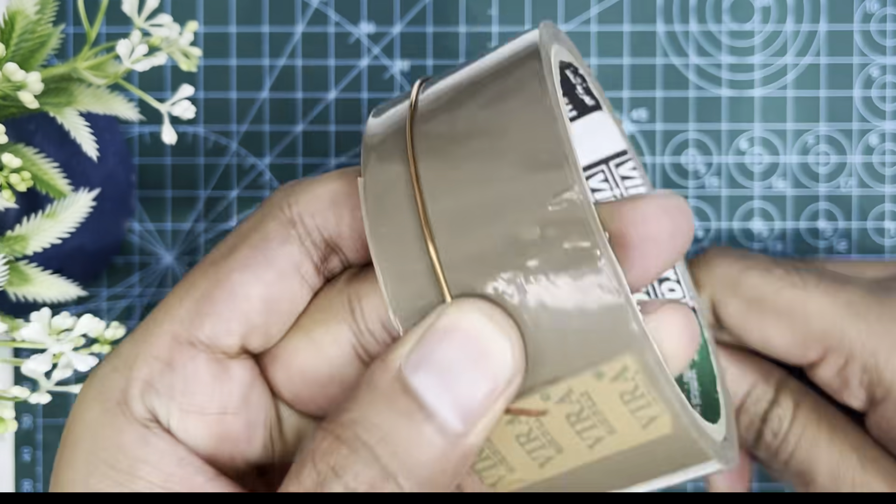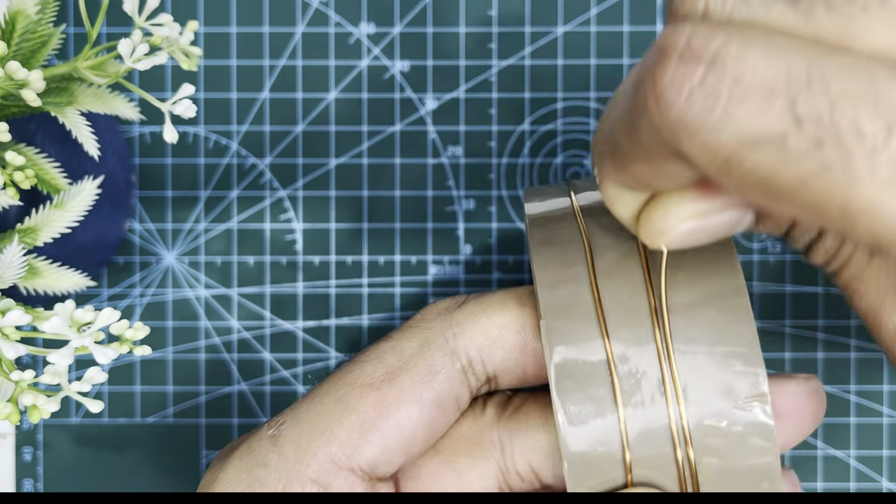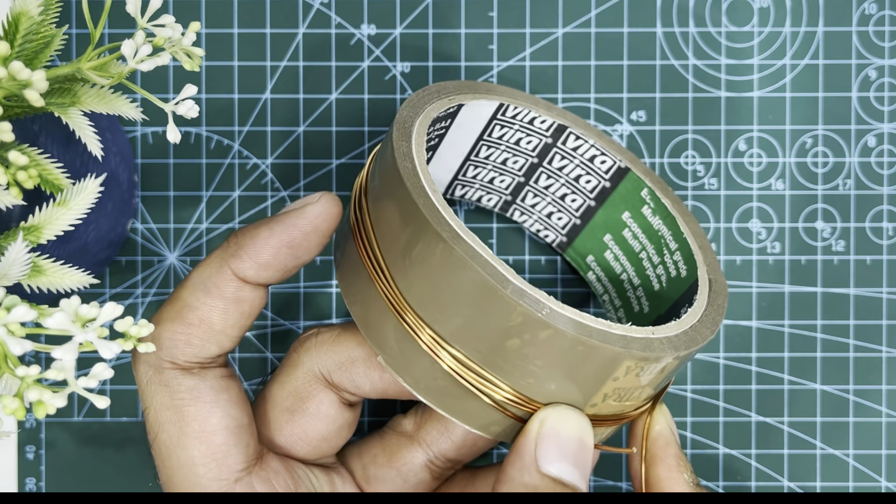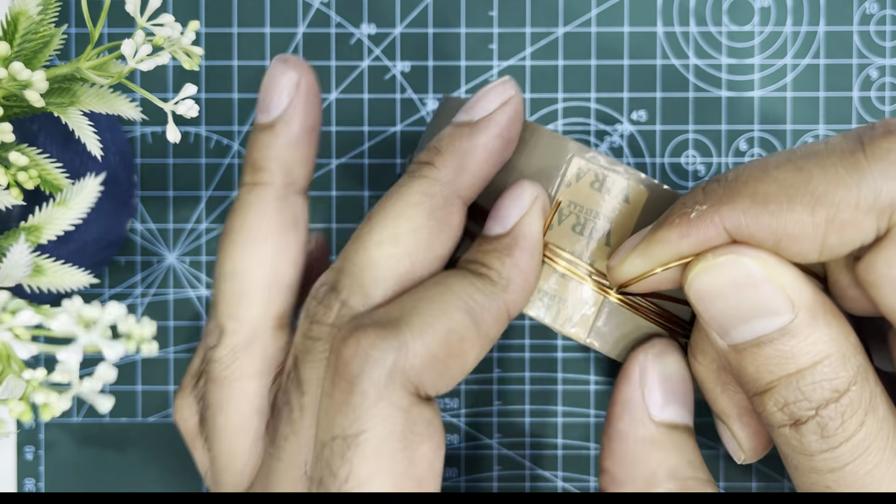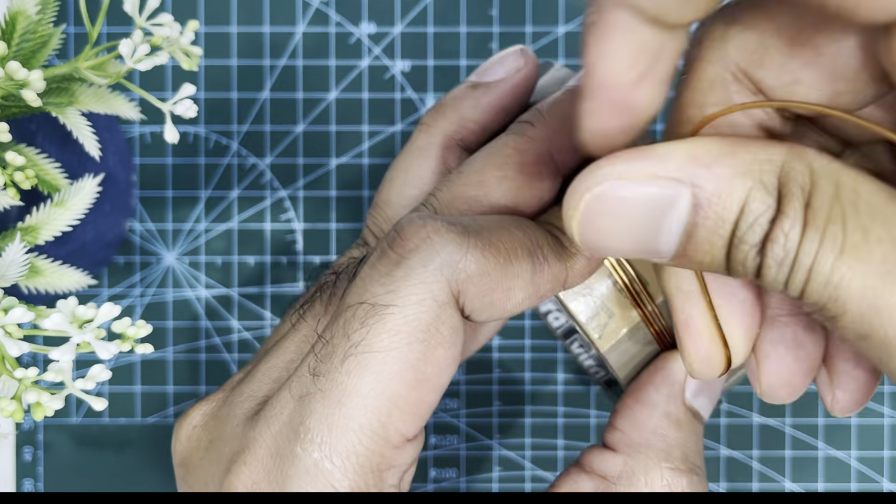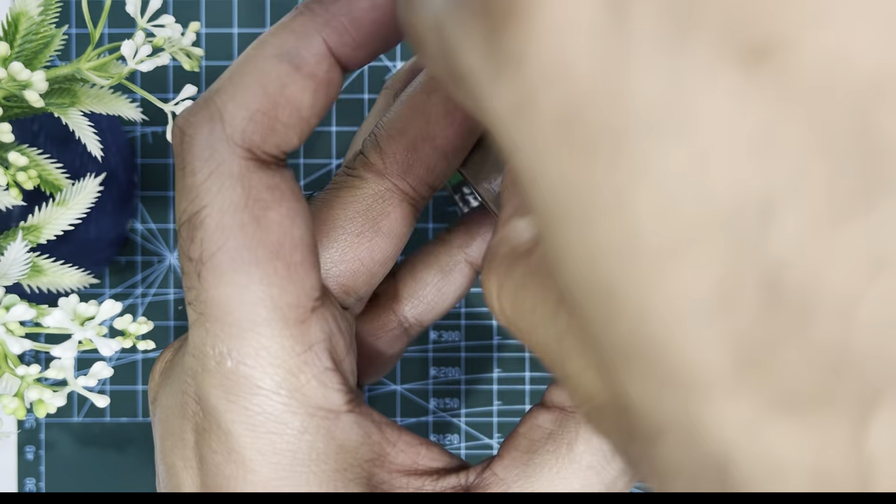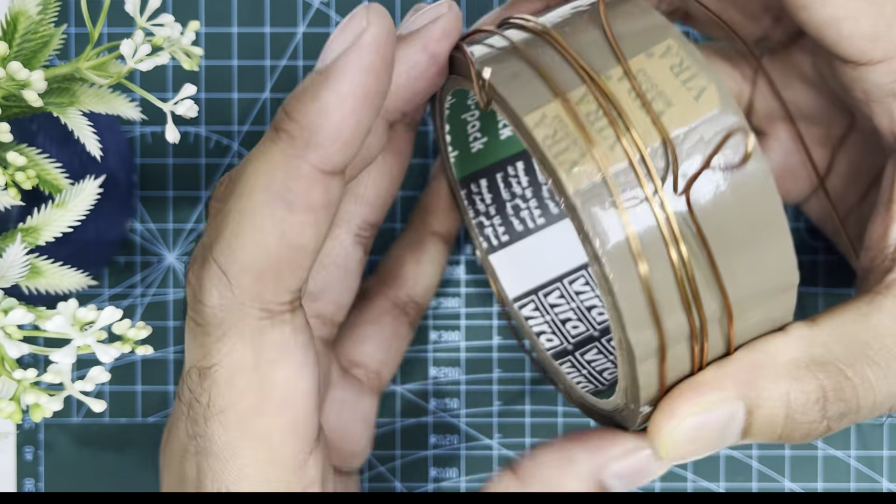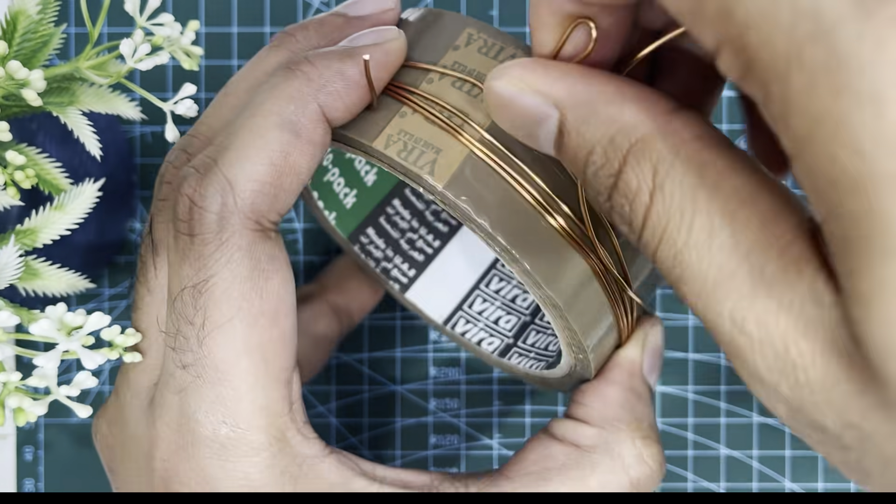Start rolling the copper wire 3 times. Just before completing the 4th turn, twist the wire like this. After that, continue rolling till the 8th turn.